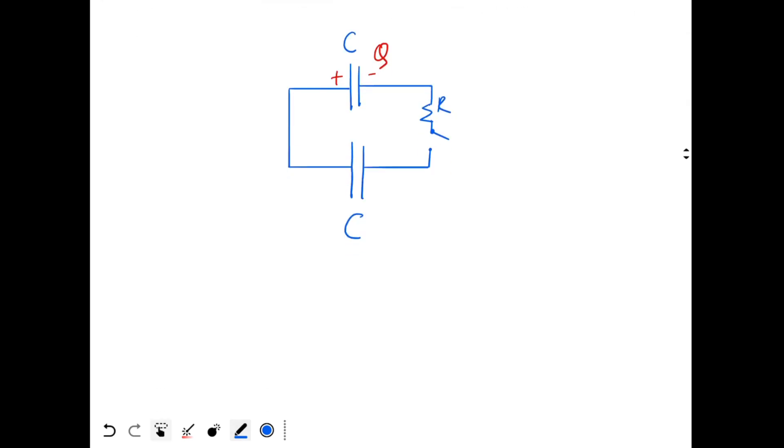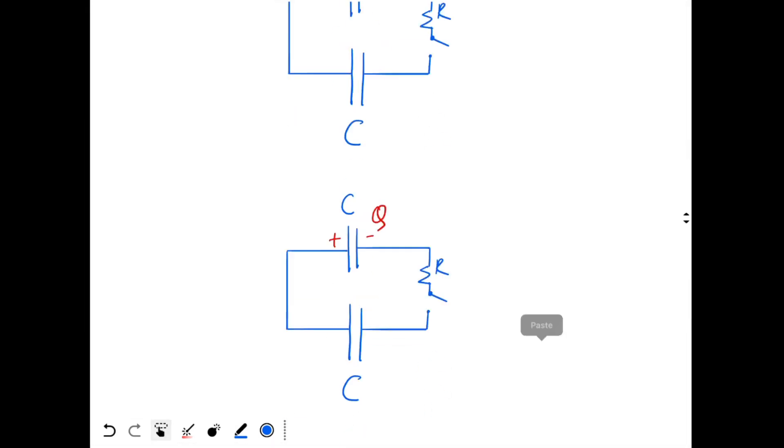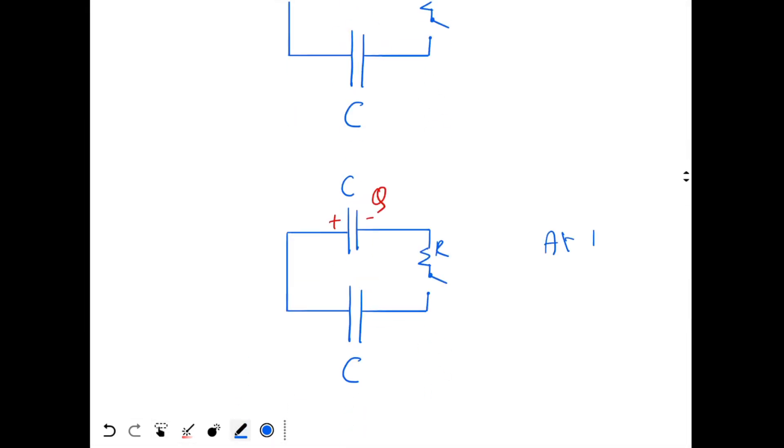So we will redraw the circuit and we will close the switch. At time t, the switch has already been closed at t equal to 0 and the current will be flowing in the circuit. This capacitor will acquire some charge Q plus and minus.